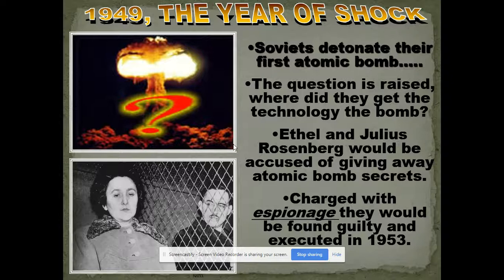The same year brought two things that were not Cold War successes: China fell to communism, and the Soviet Union successfully tested their first atomic bomb. We knew the Soviet Union would eventually acquire an atomic weapon, but thought it would take until 1951 or 1952 — they developed it much sooner because Julius and Ethel Rosenberg gave away nuclear secrets to the Soviets. Critics argued they were falsely accused, but when the KGB released their Soviet-era records in the mid-1990s, it was uncovered that they were paid spies on the Soviet payroll. The Rosenbergs were convicted of espionage in 1953 and both were electrocuted.